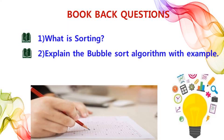The textbook questions are: explain the bubble sort algorithm with an example, which is a 5-mark question, and what is sorting, which is a 2-mark question. In this session we learned what is selection sort and what is bubble sort. In the next session we will see the examples of bubble sort, selection sort, and dynamic programming.